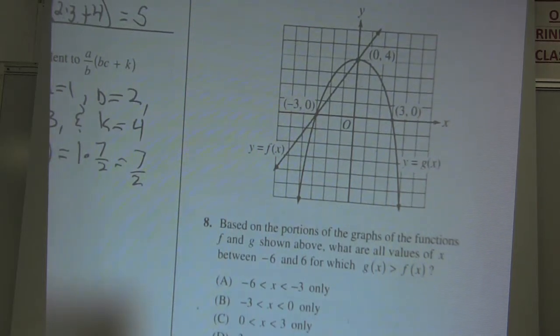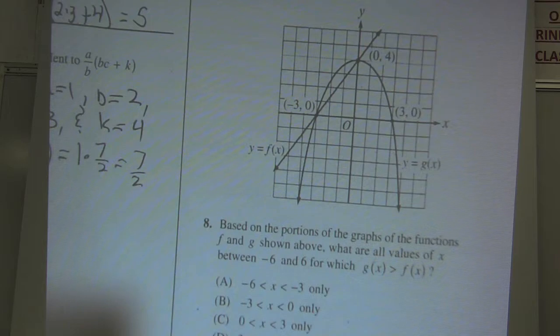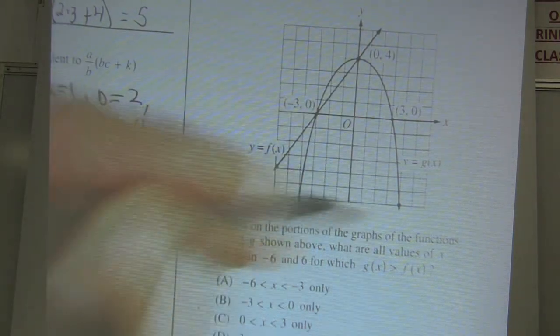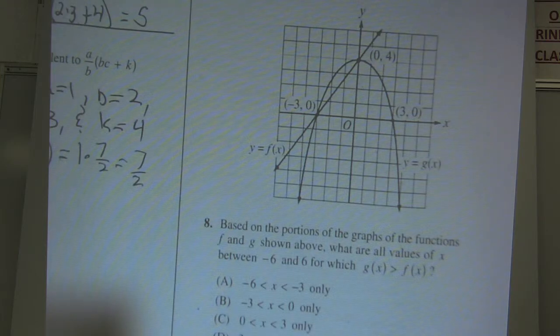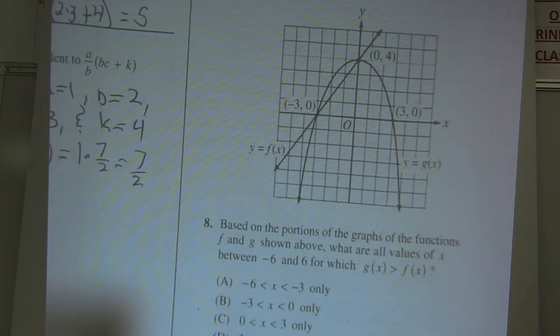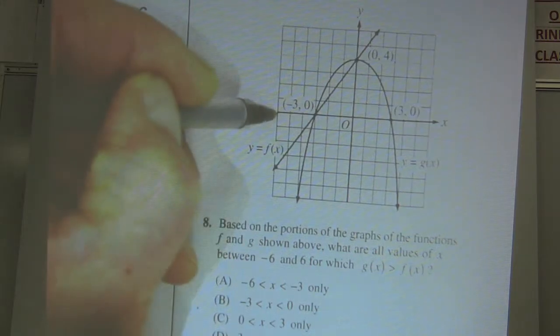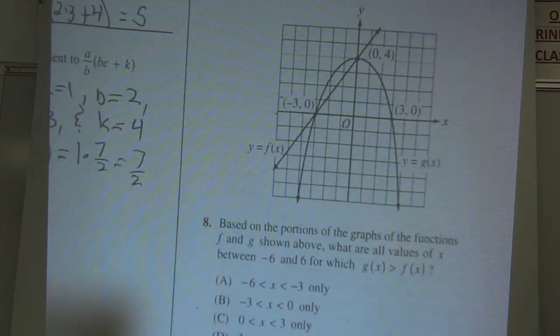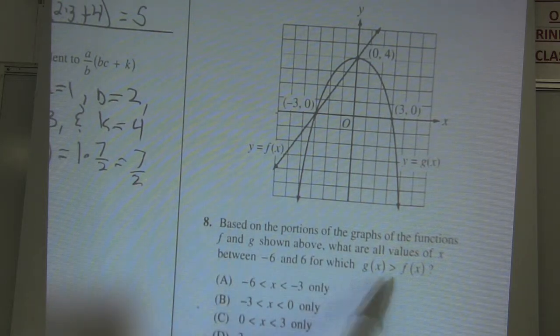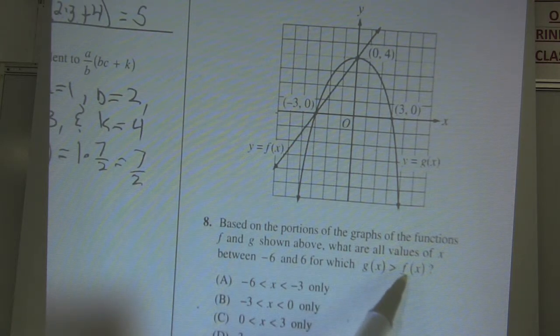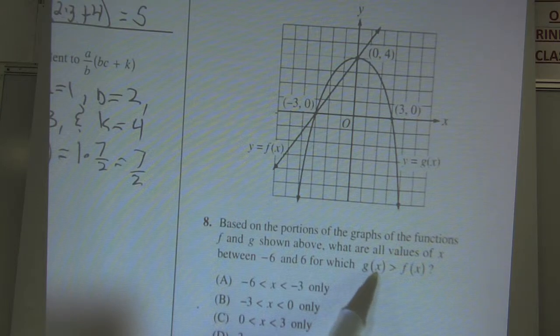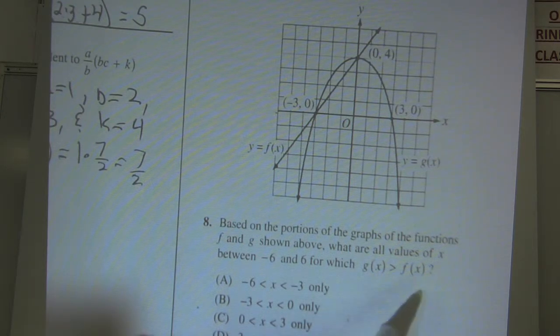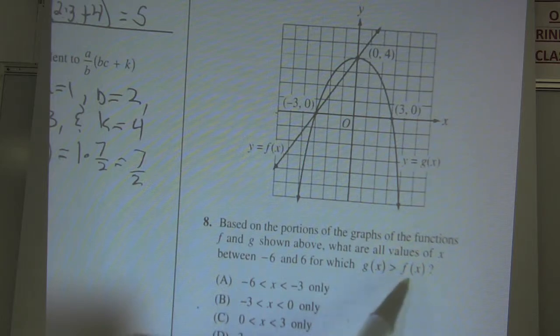Number eight: Based on the portions of the graphs of the functions f and g shown - f is this straight line right here and g is this upside down parabola right here - what are the values of x between negative 6 and positive 6? It goes to the left negative 6, to the right positive 6. For which the function g is greater than the function f. When they're giving you graphs, when one's greater than the other, it's asking when is g higher than f, when is g on top of f.